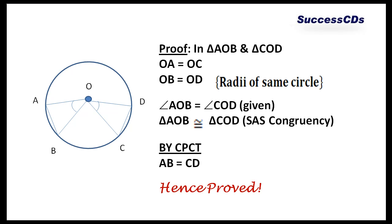Now SAS congruency is our side-angle-side congruency. Thus, by CPCT, AB is equal to CD. Hence, proved.